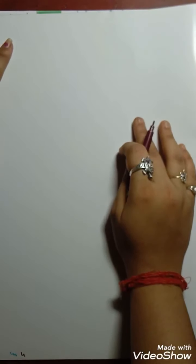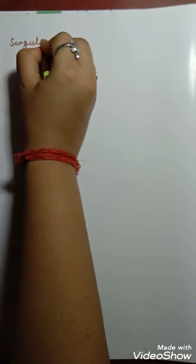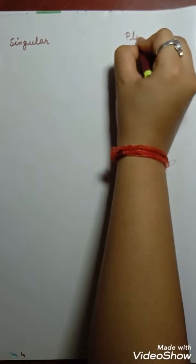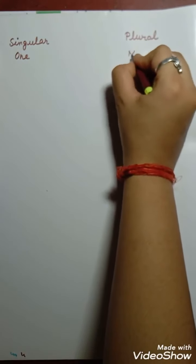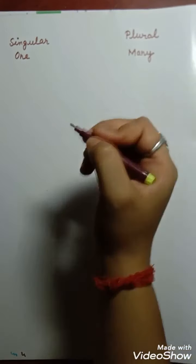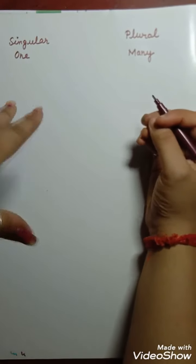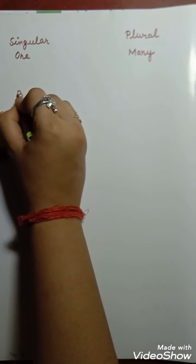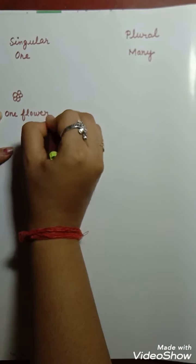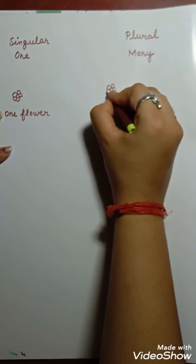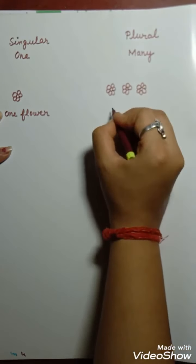Now my dear children, I will explain you with the help of the picture. Dear children, singular means one and plural means many. While changing from singular to plural, we generally add S to the end of the word. For example: flower. One flower. Many flowers.